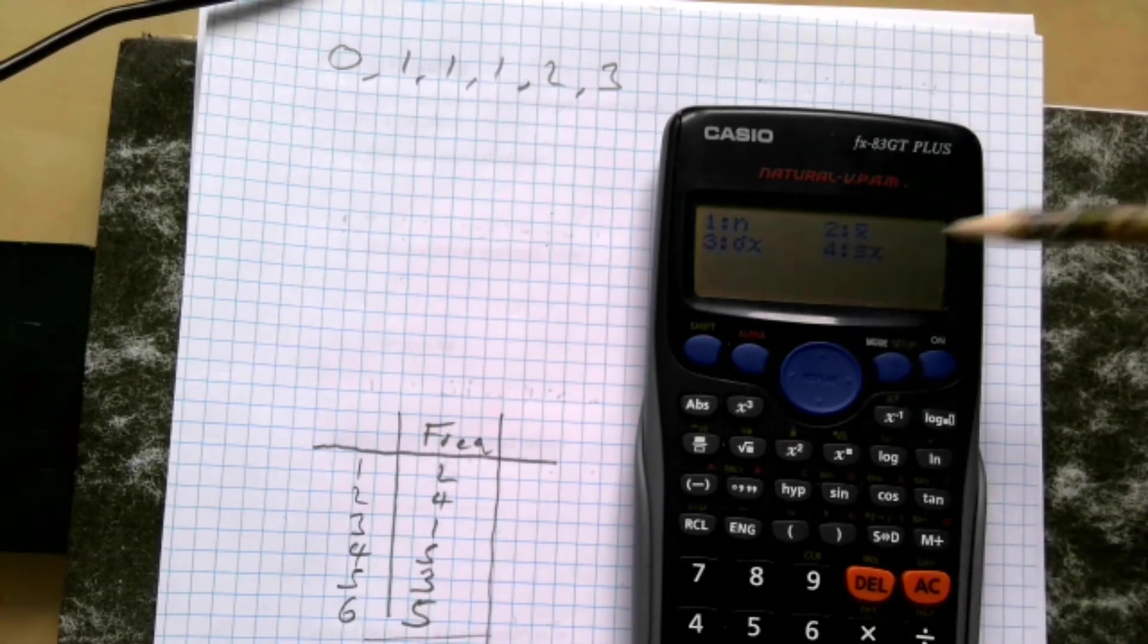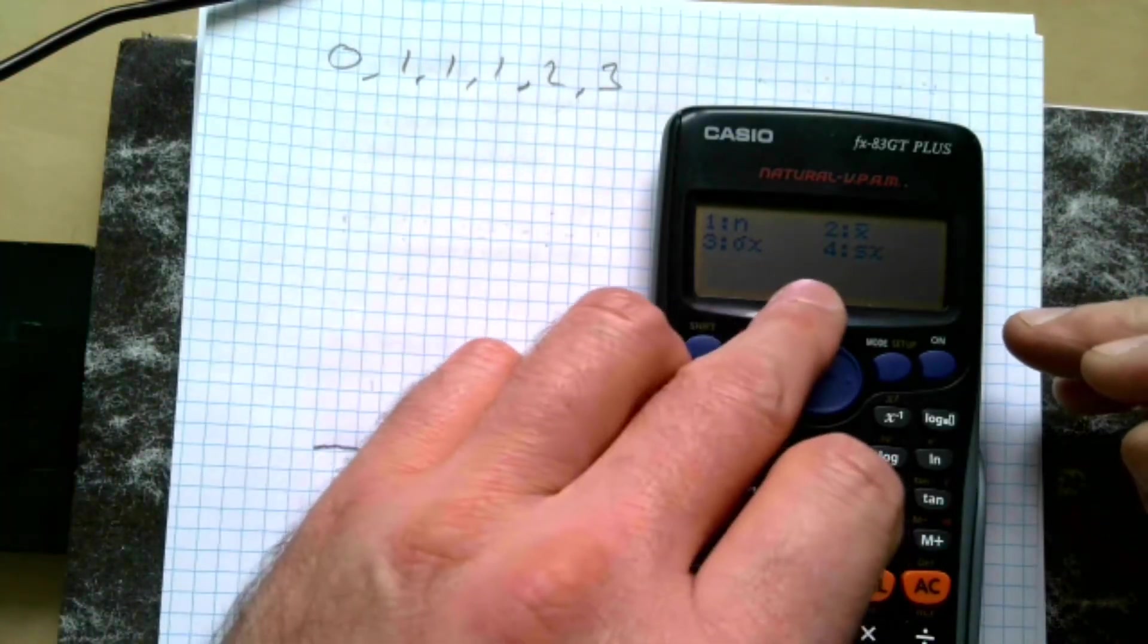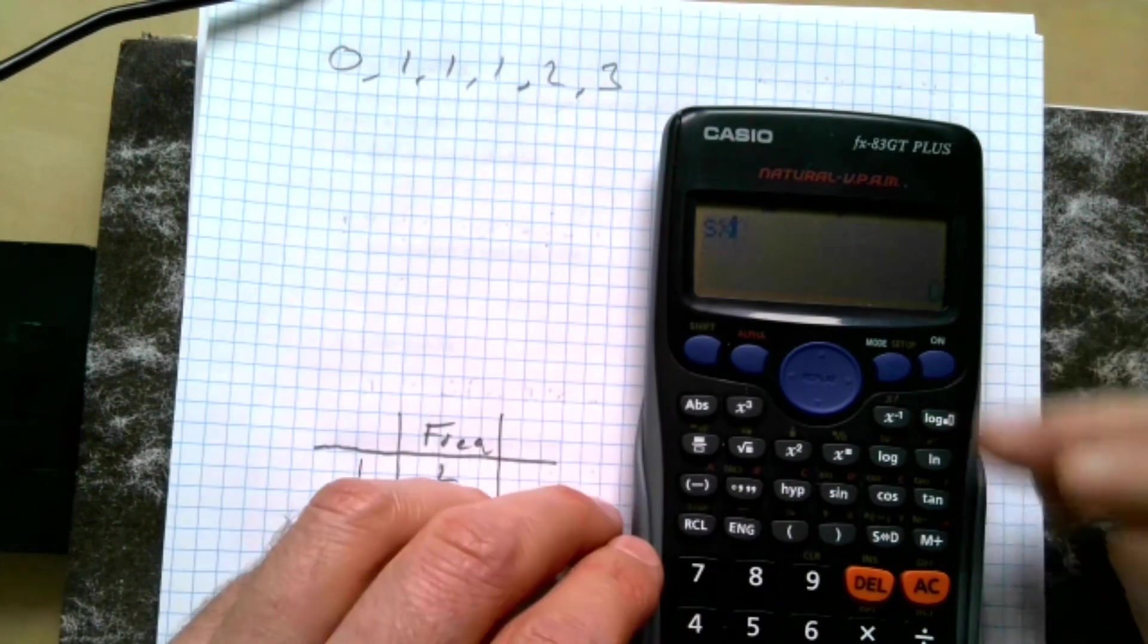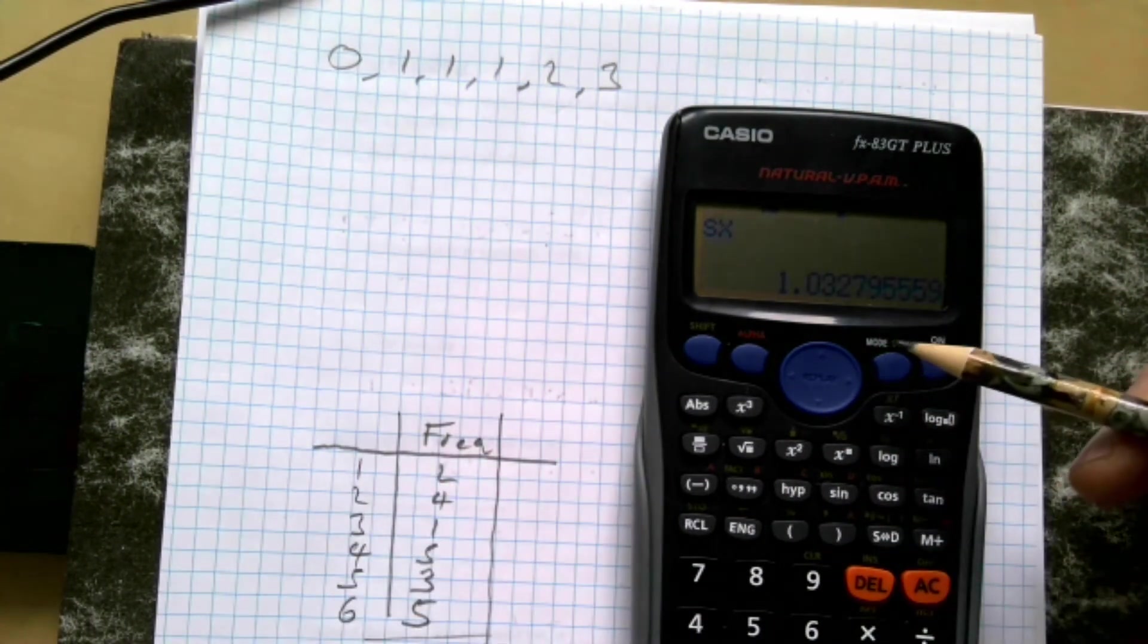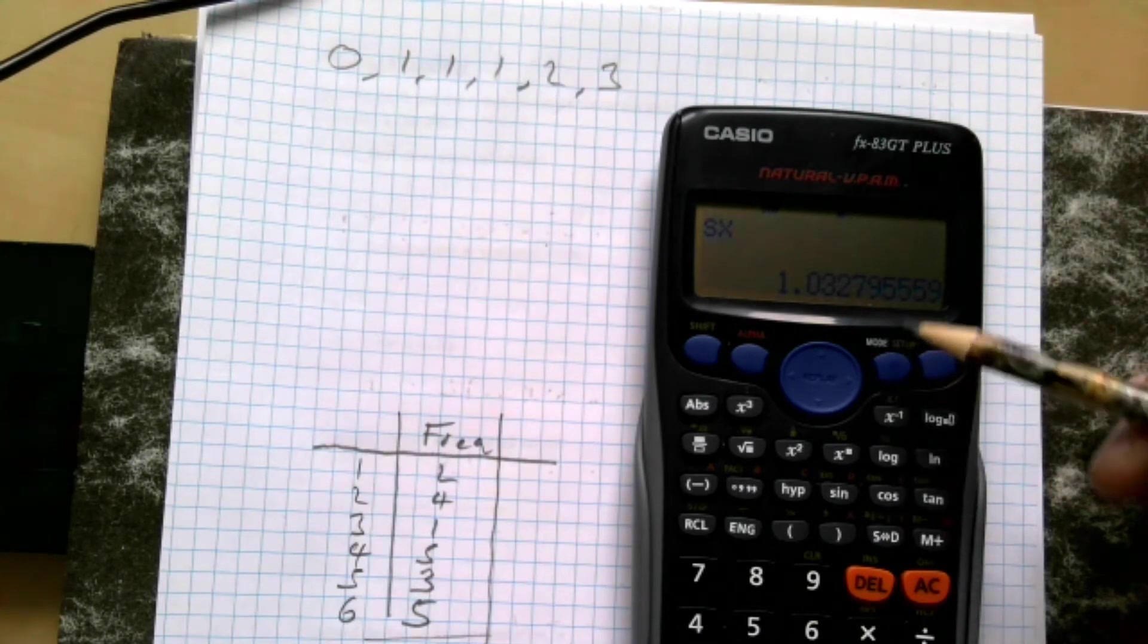So if I hit number four and there is the number of items, so that should come out to be six. There is the mean there. I think is the population and the sample, and we can sort them from there. So let's take a look. If I hit four and then hit equals, I get 1.03, which of course is my standard deviation for the sample.